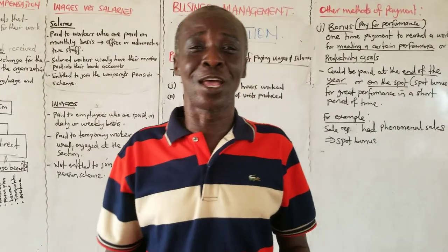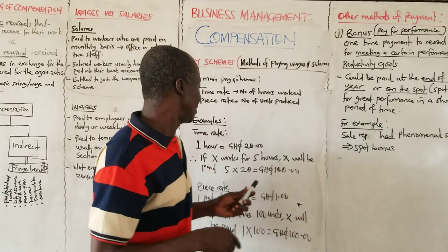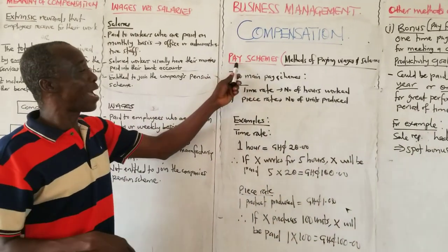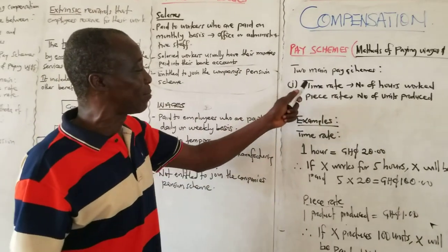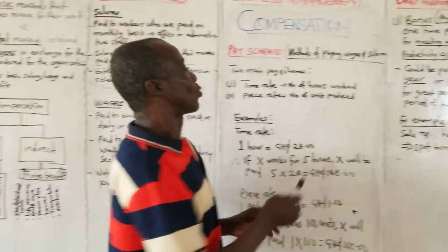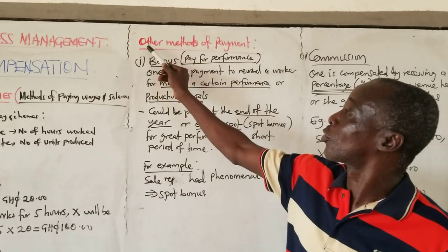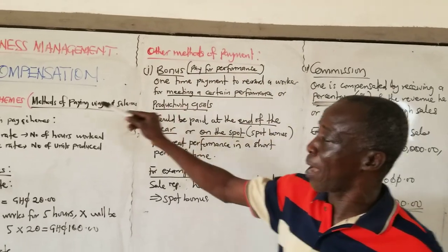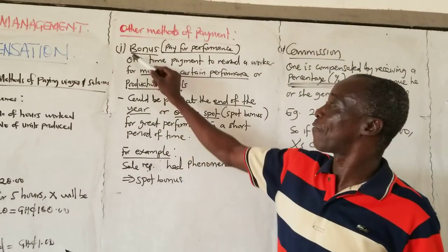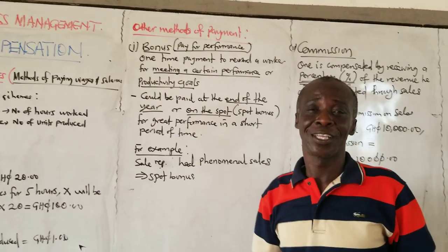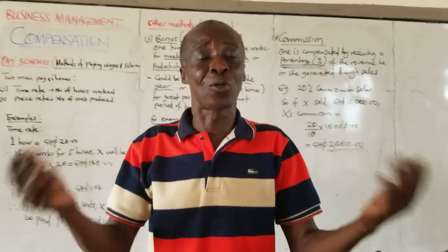Once again, you are welcome. Let's continue with our lesson. We were on pay schemes. We are finished with the two main pay schemes - time rate and then the piece rate. Now we are going to talk about the other methods of payment. The first one is bonus. You have been hearing it - 'have they paid you your bonus?' What is it?